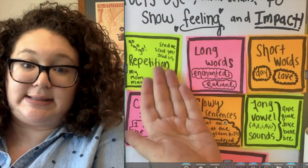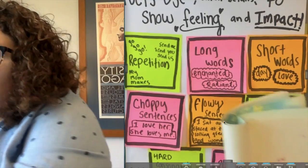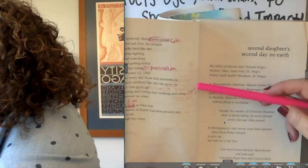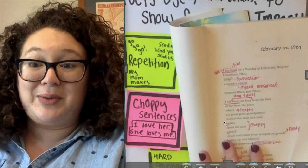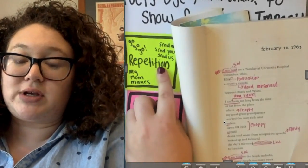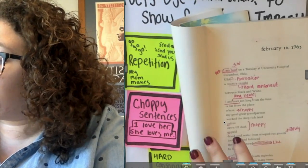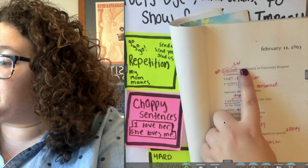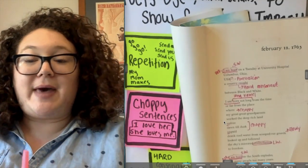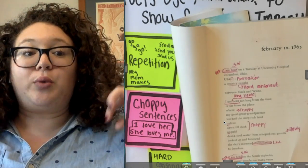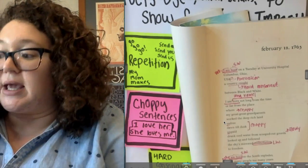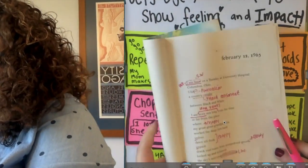The people who look like me keep fighting and marching and getting killed so that today, February 12, 1963, and every day from this moment on, brown children like me can grow up free, can grow up learning and voting and walking and riding wherever we want. I am born in Ohio, but the stories of South Carolina already run like rivers through my veins. The first thing I always notice in poems is repetition, because it's easy to see.